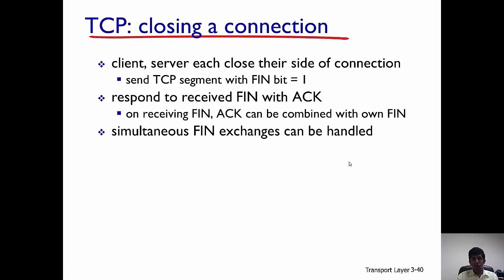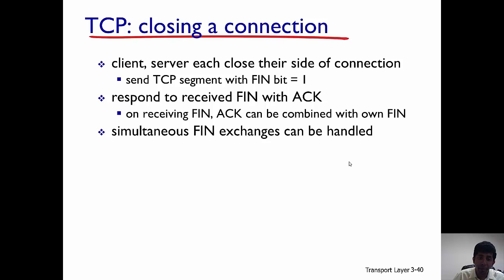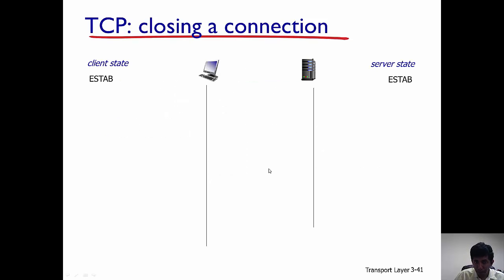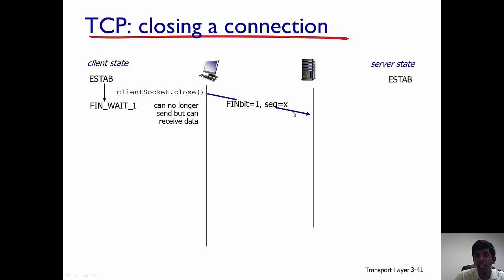When the connection has to be closed, handshake messages have to be exchanged. Both the server and client must notify each other that they want to terminate the connection, using the FIN bit. Let's assume the client wants to terminate the connection to the server. It sends a TCP segment with the FIN bit equal to one and a sequence number of X to the server.